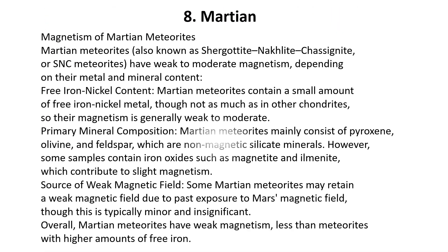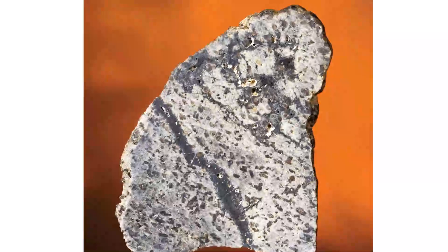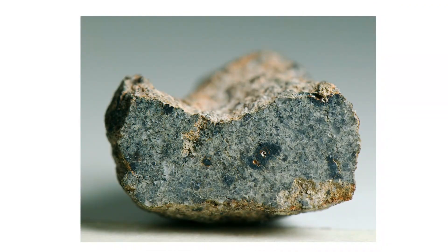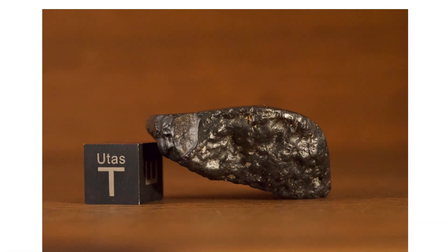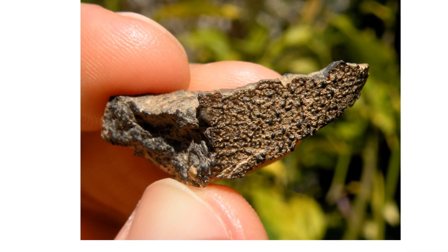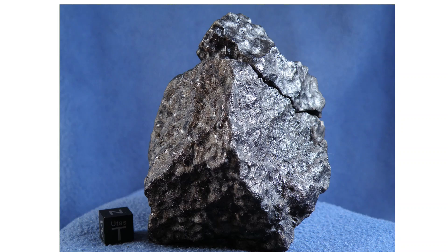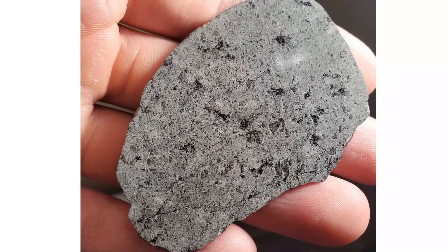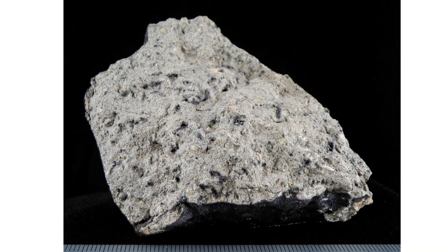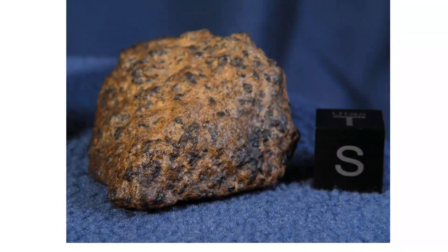Magnetism of Martian meteorites: Martian meteorites, also known as Shergottite-Nakhlite-Chassignite (SNC) meteorites, have weak to moderate magnetism, depending on their metal and mineral content. Free iron-nickel content: Martian meteorites contain a small amount of free iron-nickel metal, though not as much as in other chondrites, so their magnetism is generally weak to moderate. Primary mineral composition: Martian meteorites mainly consist of pyroxene, olivine, and feldspar, which are non-magnetic silicate minerals. However, some samples contain iron oxides such as magnetite and ilmenite, which contribute to slight magnetism. Some Martian meteorites may retain a weak magnetic field due to past exposure to Mars' magnetic field, though this is typically minor and insignificant. Overall, Martian meteorites have weak magnetism, less than meteorites with higher amounts of free iron.